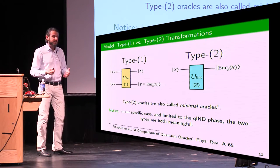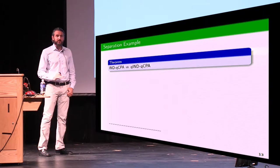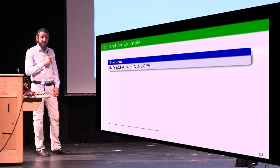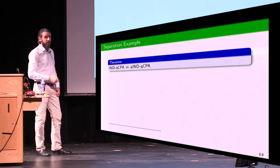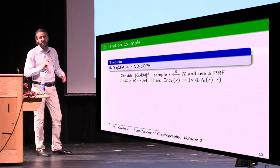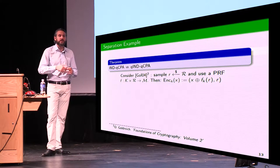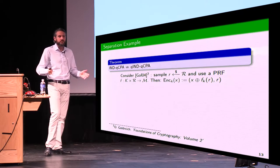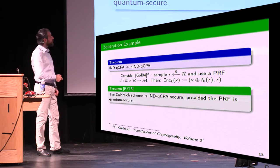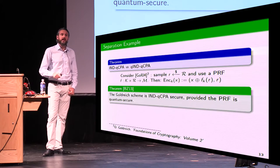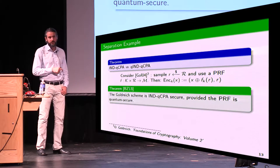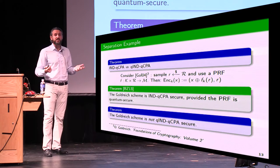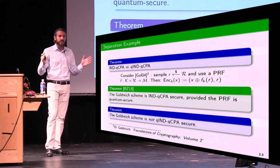Keeping in mind these differences, we define our notion of quantum indistinguishability under quantum chosen plaintext attack. It is easy to see it is at least as strong as other achievable notions, but we can say it is strictly stronger. To show this, consider the following standard encryption scheme which uses a pseudorandom function to generate a key for the one-time pad. Boneh and Zhandry showed that as long as the PRF is quantum secure, this scheme achieves their security notion. But we can show this scheme is insecure according to our notion, as a consequence of a more general impossibility result covering a much broader range of encryption schemes.